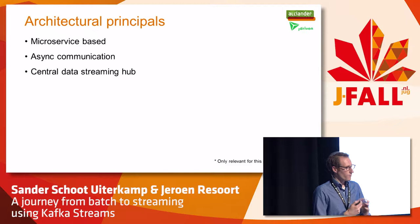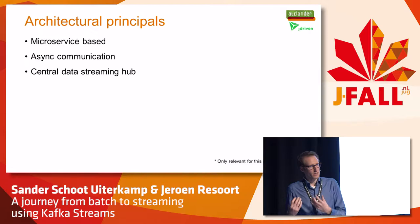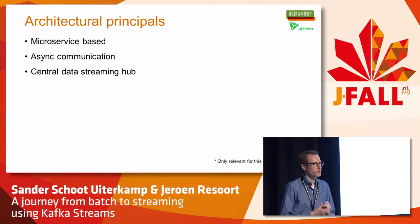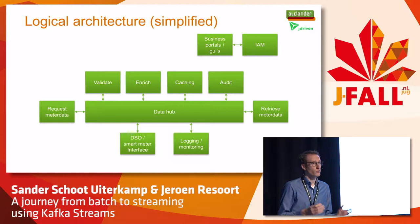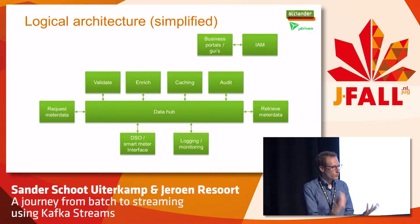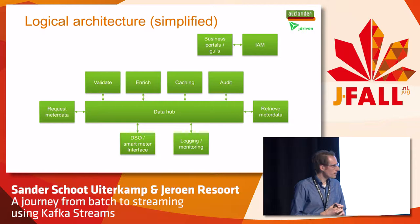We started thinking: what kind of architectural principles can we apply if we want to design a new system? We want to do microservice-based technology, we want to use asynchronous communication, and we want to use a central messaging streaming hub. If we transfer that to a logical architecture, it looks like this: we have a central data hub. At the left, parties can request meter data. At the end, they retrieve it with the batch interface, and in the middle we switched out the implementation with a new streaming engine using specific microservices.